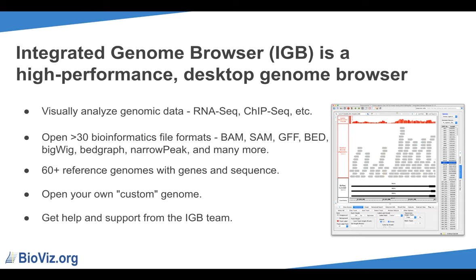File formats supported include aligned sequence files such as BAM or SAM, annotations such as GFF or BED, graph data such as BigWig or BedGraph, and study-specific data such as NarrowPeak, for example from ChIP-Seq studies. IGB has built-in support for over 60 reference genomes, including gene annotations. You can also load your own custom genomes and gene annotations if they are not already in IGB.